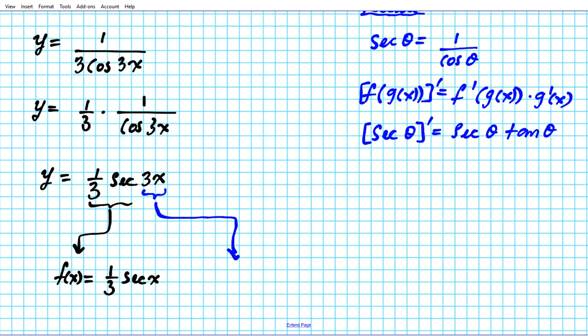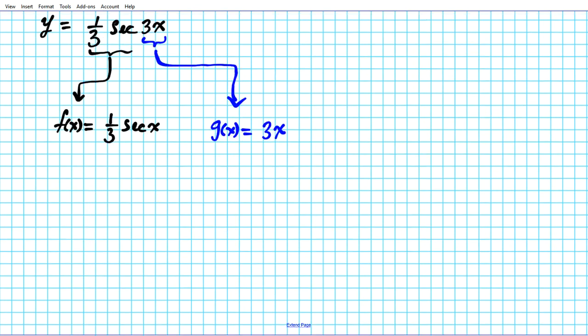All right, so the inner function is simply 3x. All right, so let's go ahead and find the derivative of the outer and the inner functions. So f prime of x is one third, you just factor one third and differentiate secant. The derivative of secant is secant x tan x. Okay, so that's f prime.